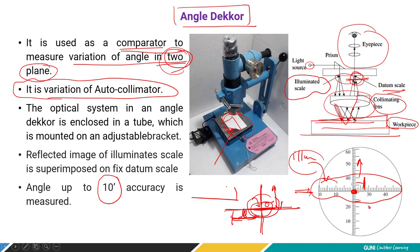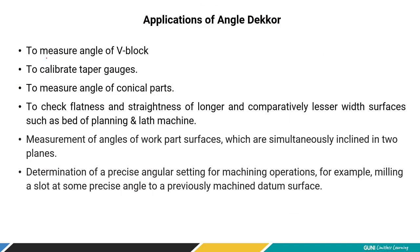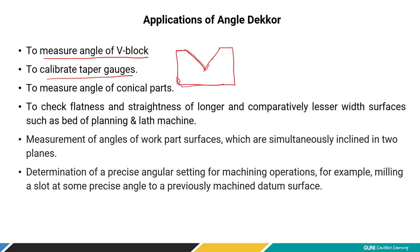The angle decker is used to measure the angle of big blocks. It is also used to calibrate taper gauges and V-blocks — which are essential tools used in fixing circular jobs on a machine table. To measure the V-block angle, you first set the angle decker using a standard workpiece, then replace it with the V-block and take the measurement.